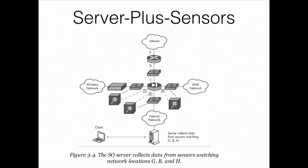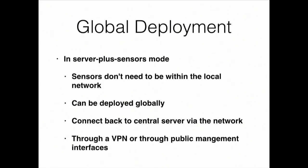With server plus sensors, you've got sensors running software to process the data, and then you analyze it at the central server — it collects data and lets you analyze it separately. A global deployment requires server plus sensors because you can't possibly get all the traffic in one location. You should just be getting the results to one location to analyze. They'll connect back through some kind of network like a VPN channel to get everything back to the main box for analysis.